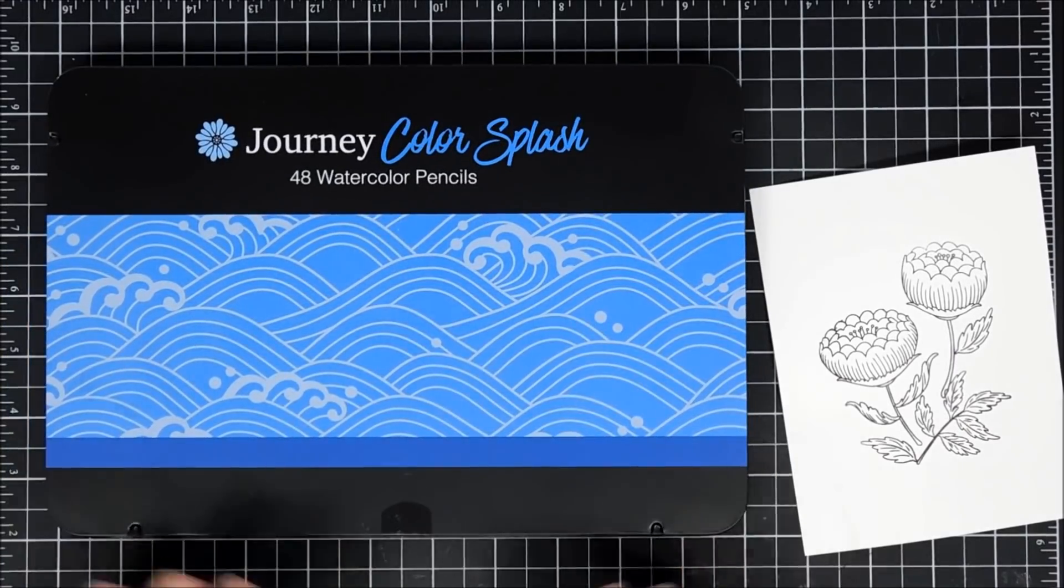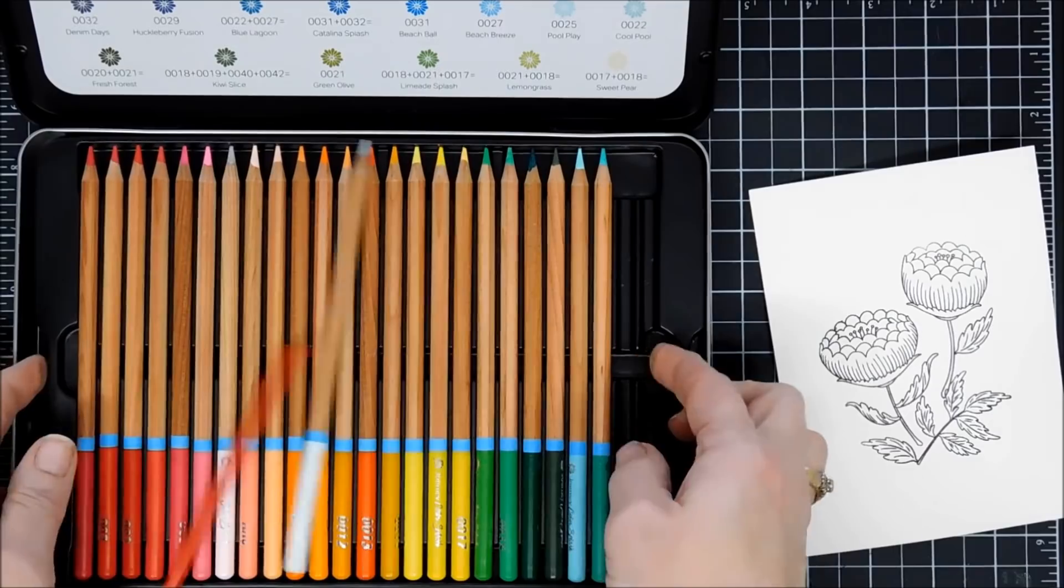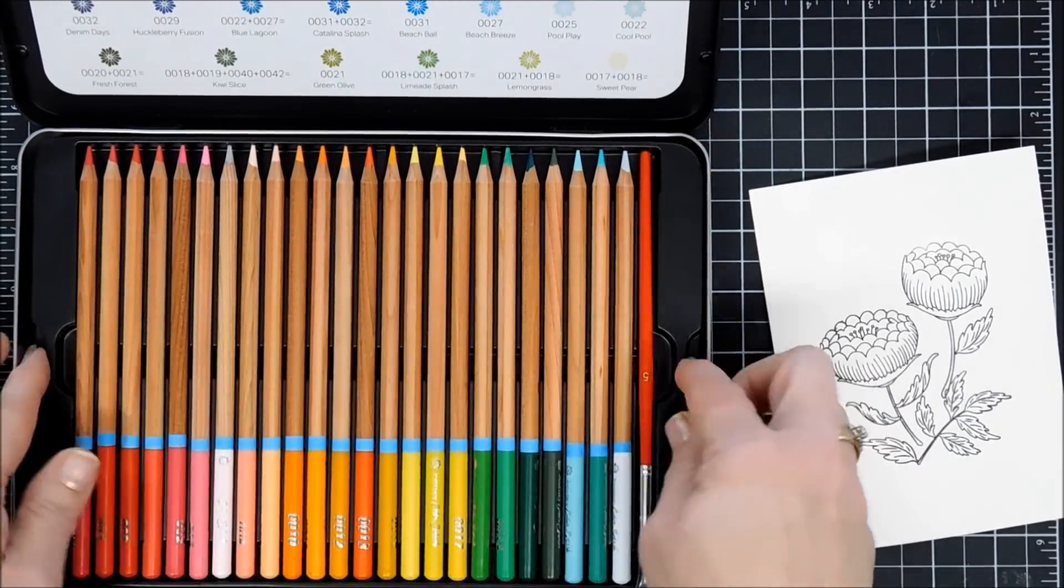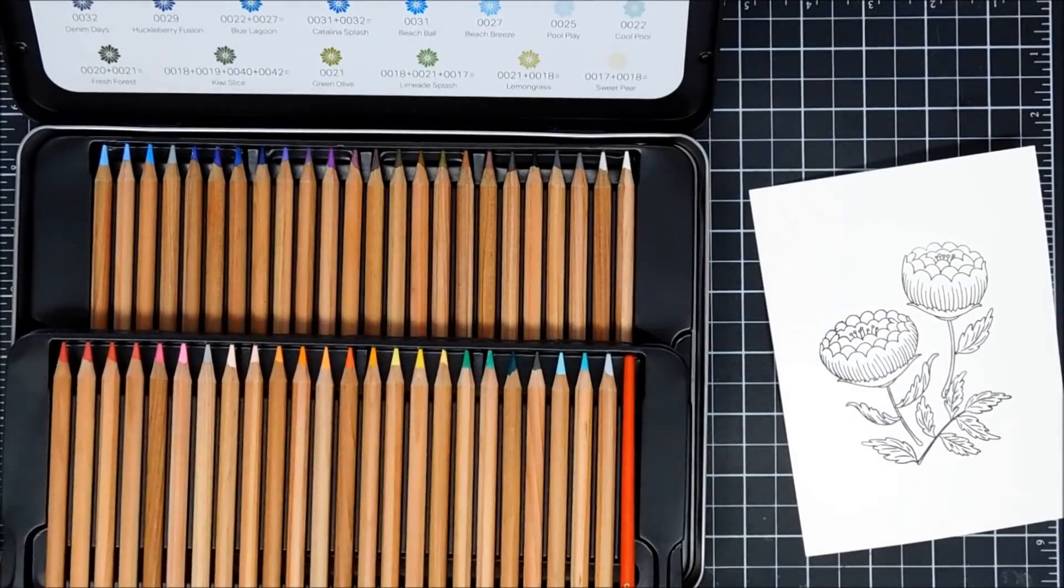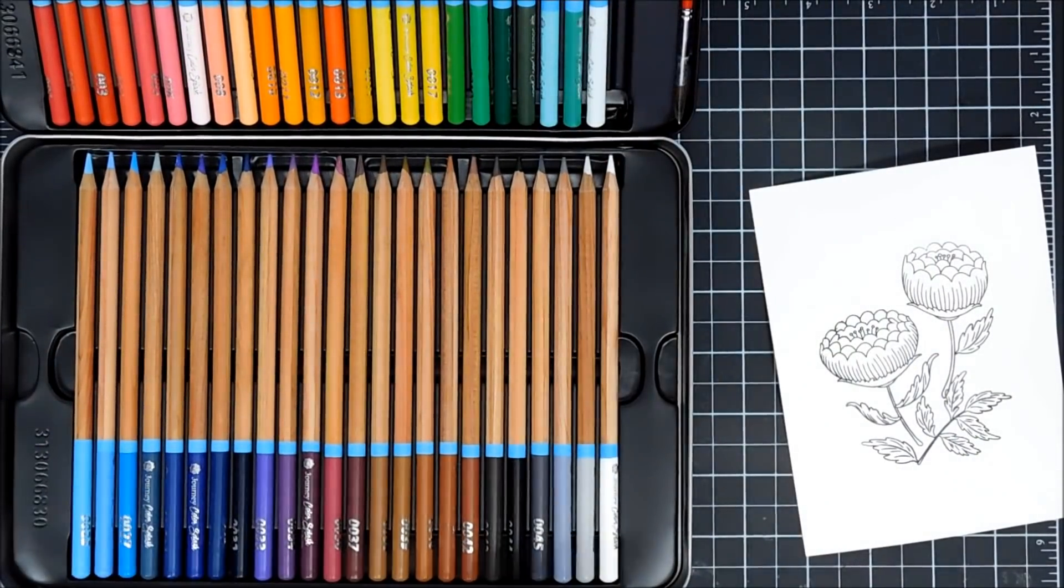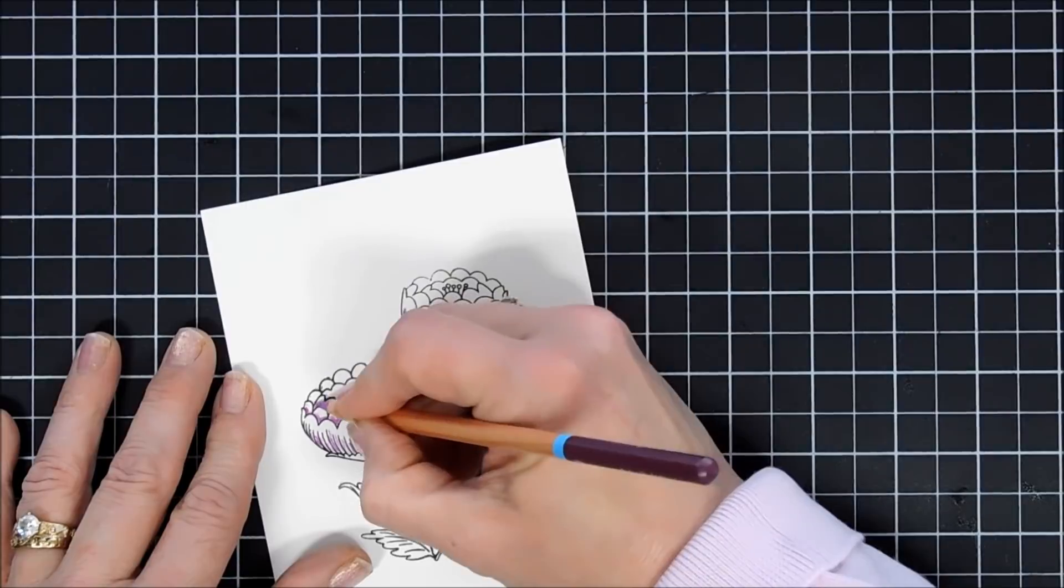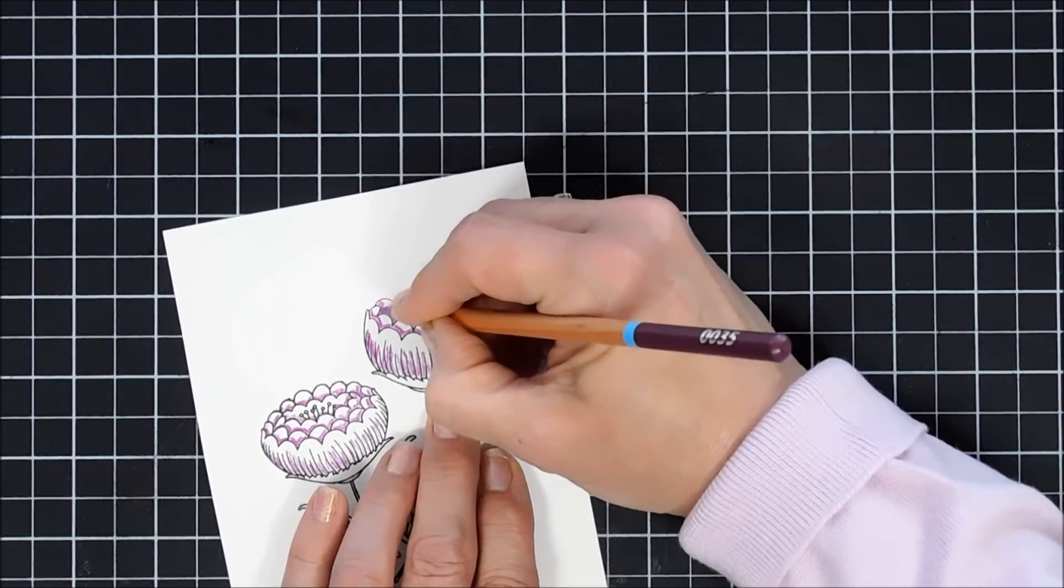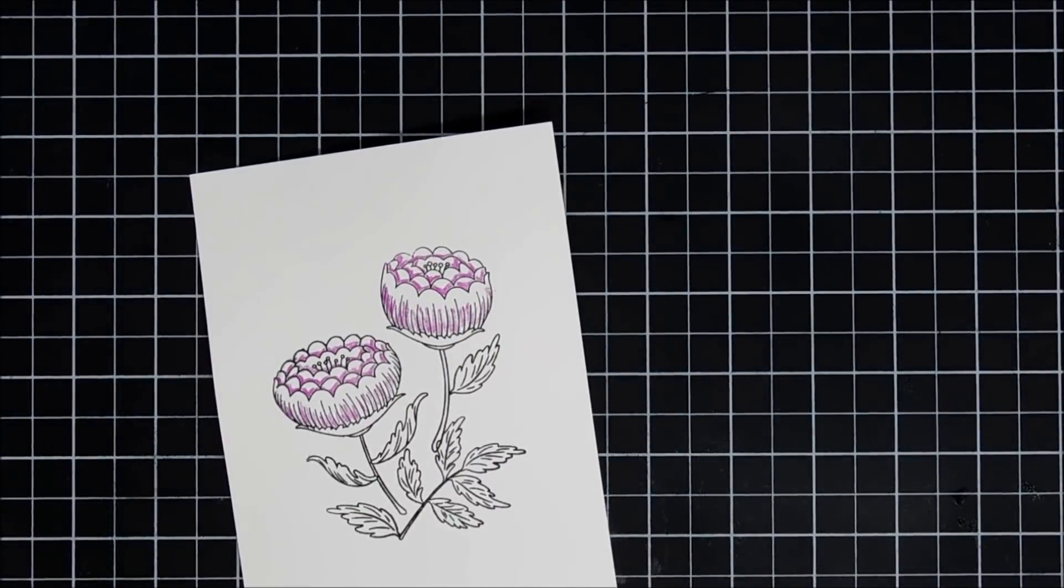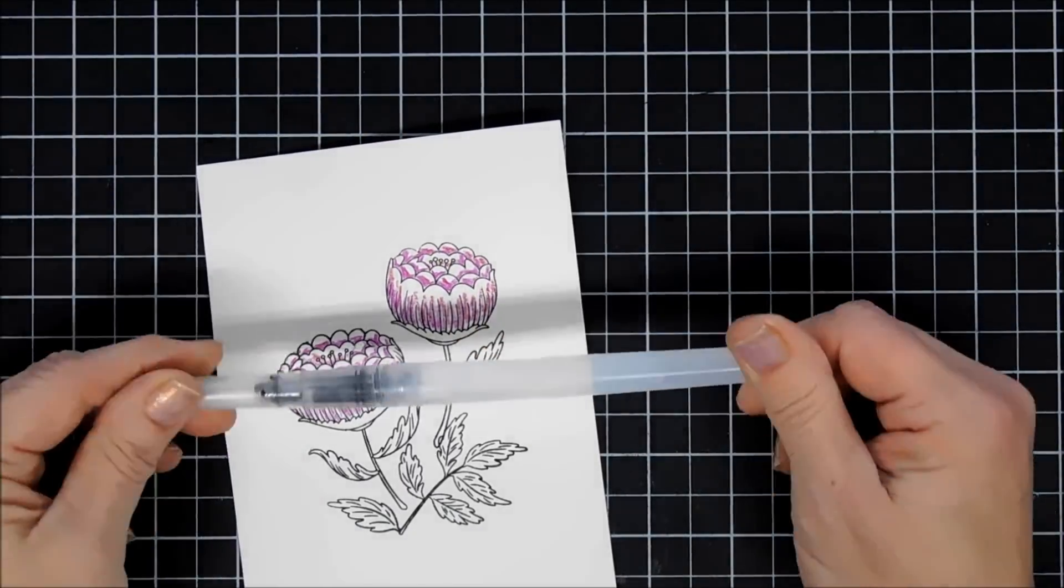Once that's melted, we're going to do some watercoloring. I have some brand new watercolor pencils I get to try out. These are from Spellbinders called the Journey Color Splash Watercolor Pencils. It's a 48-piece set. I wanted to try out a better variety. All you do is color on your image, and then you use your water brush to spread that color out. If you don't have a water brush, you could use just a regular paint brush and some water.